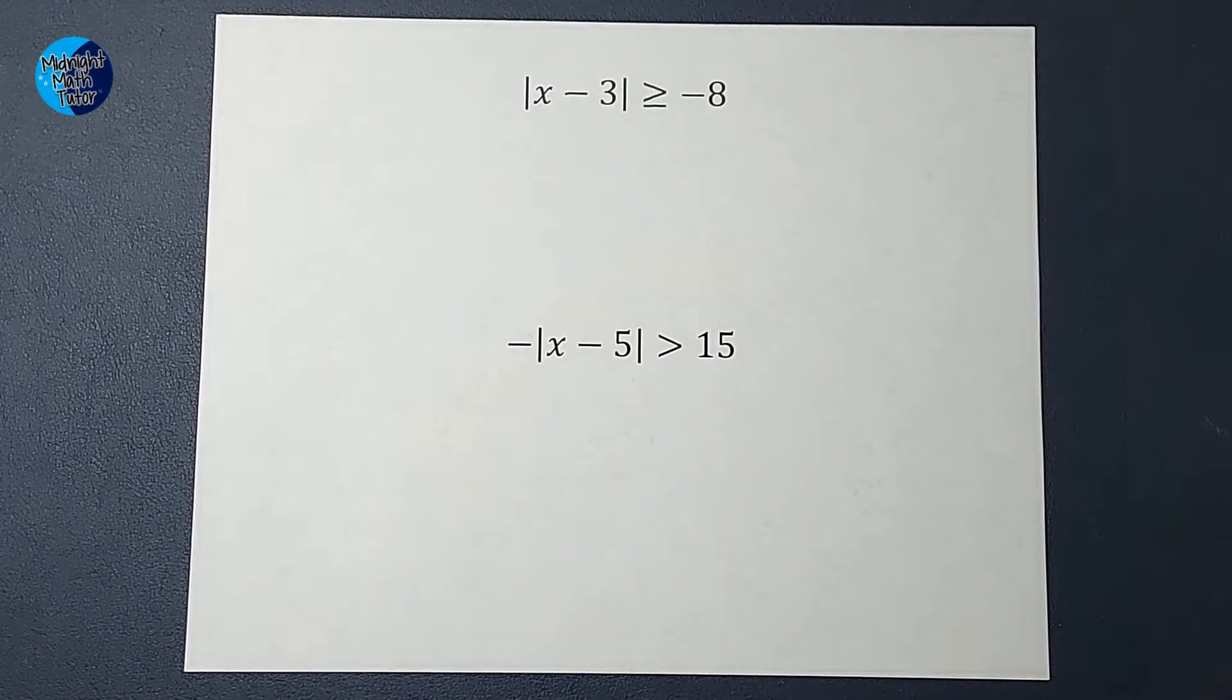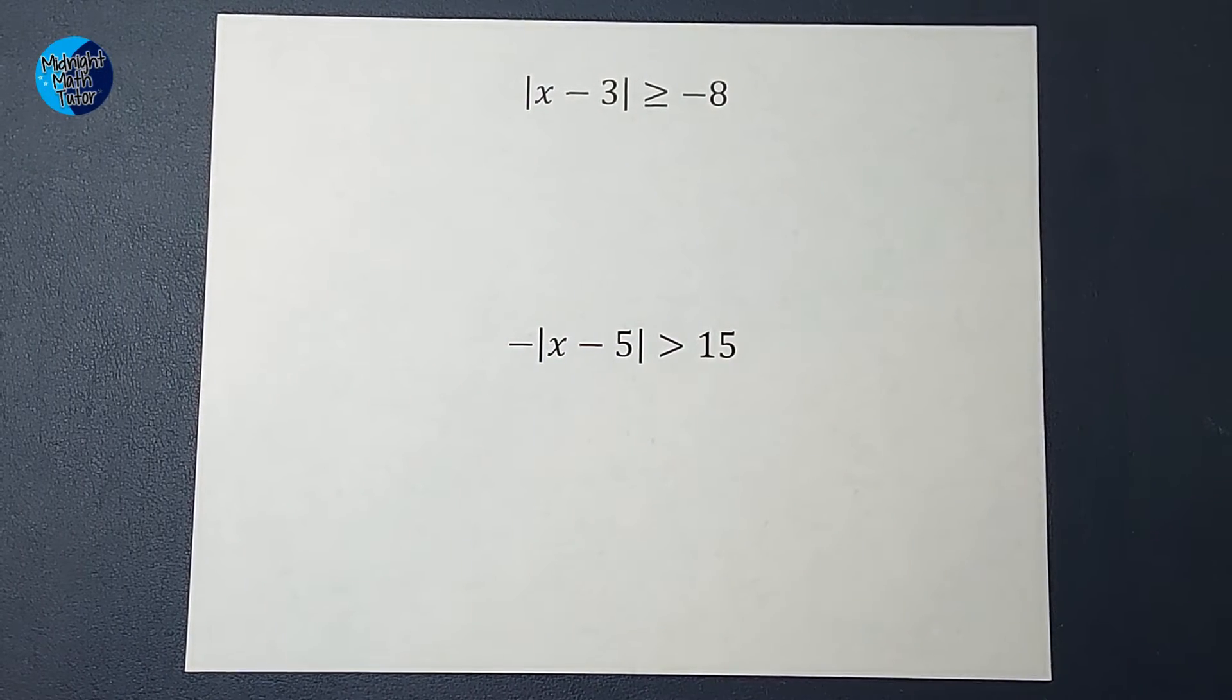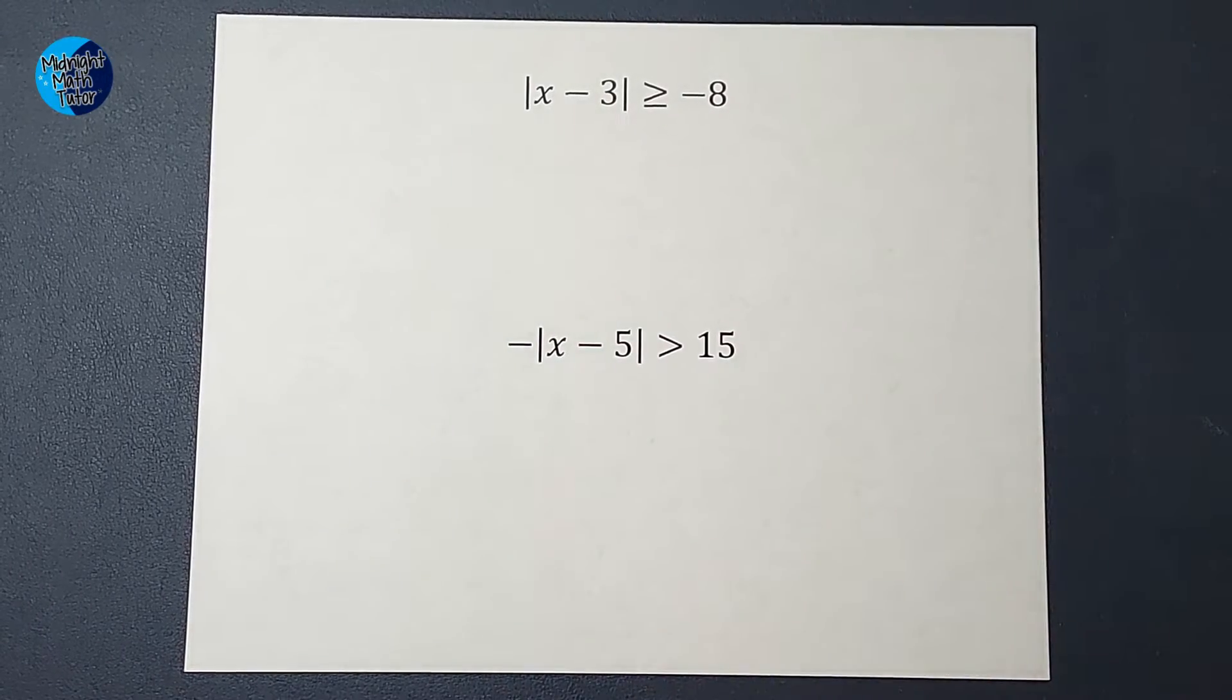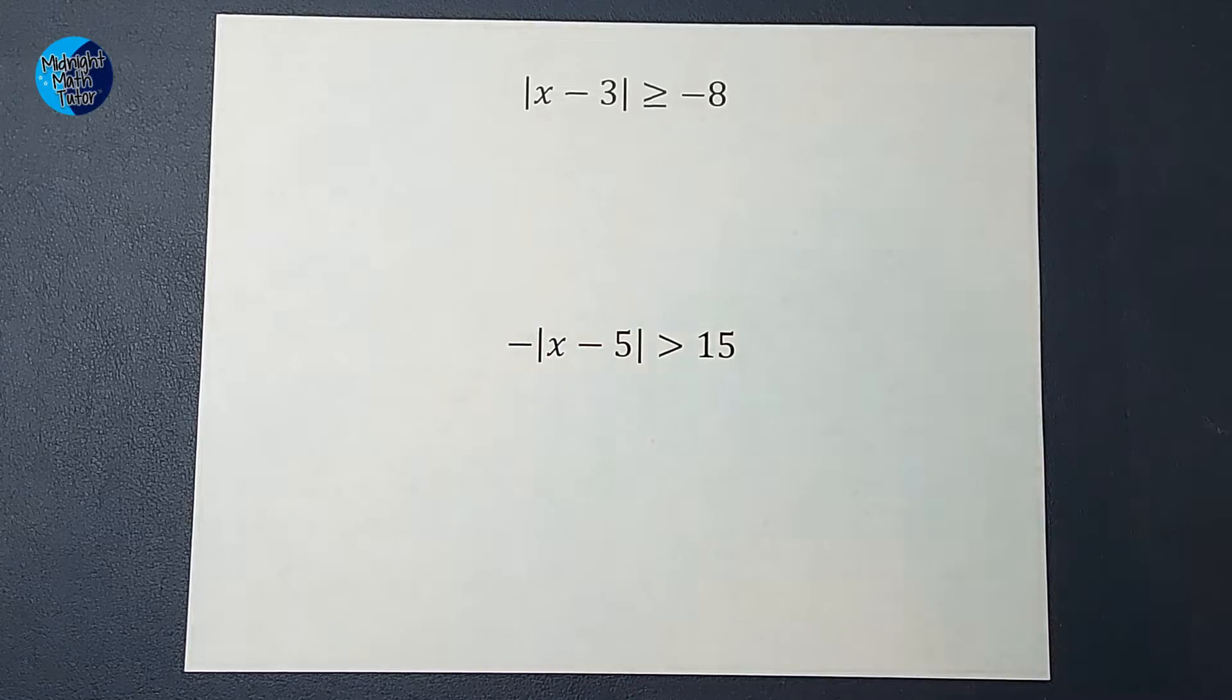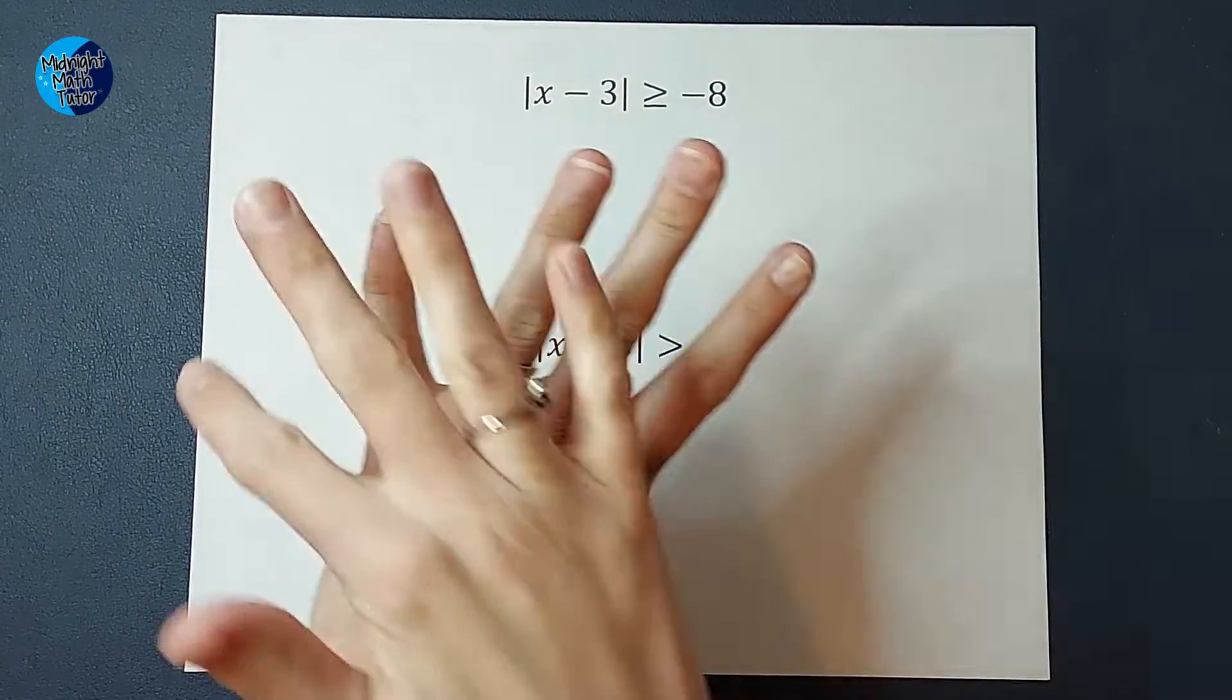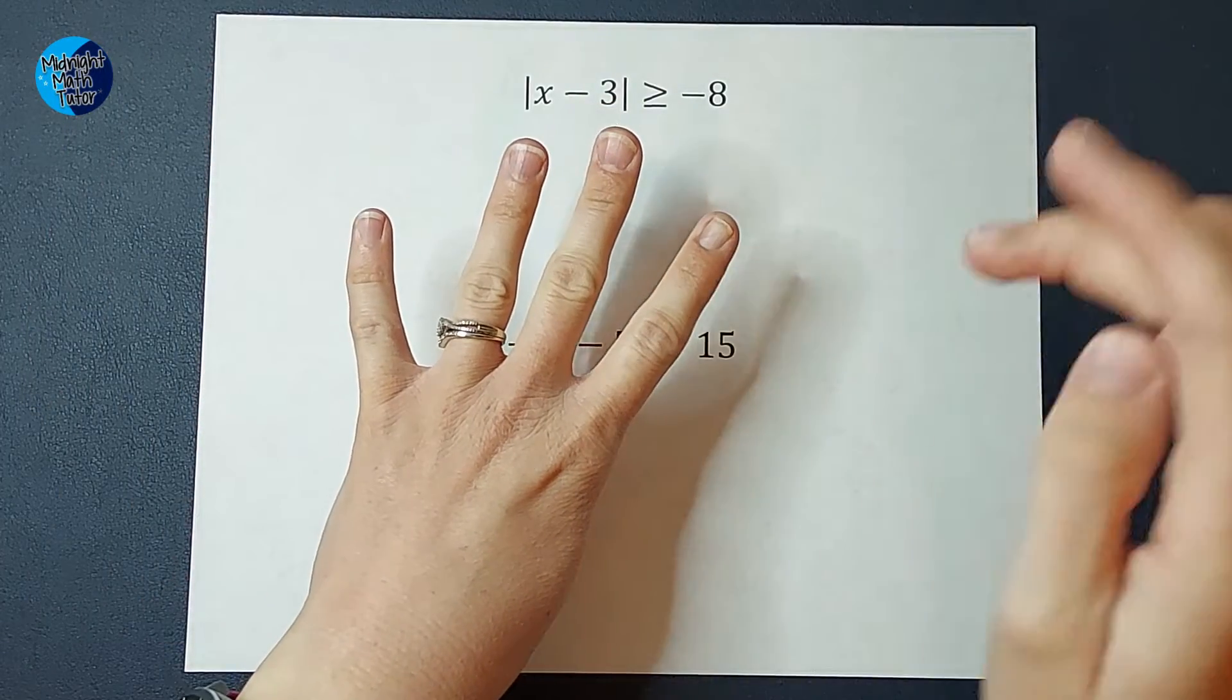Hey guys, we are looking at some absolute value inequalities and these ones are kind of special because we've got some negatives. So when you have absolute value inequalities, there's four types of answers you might get.